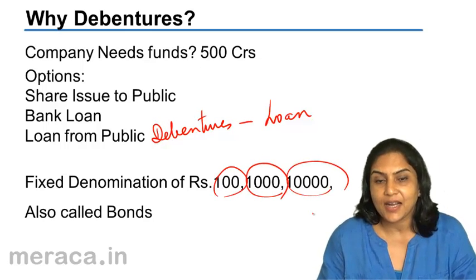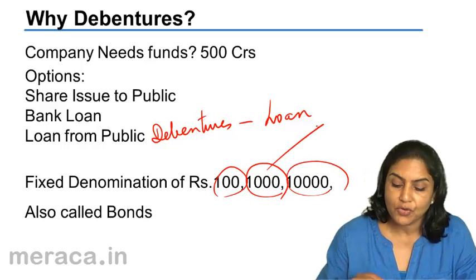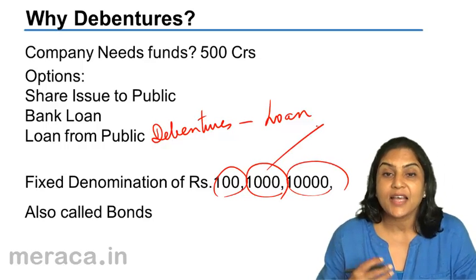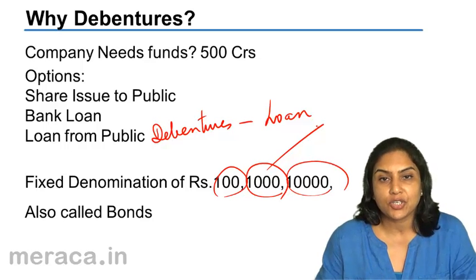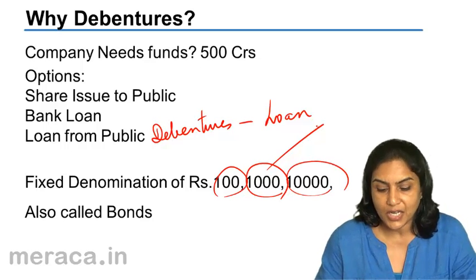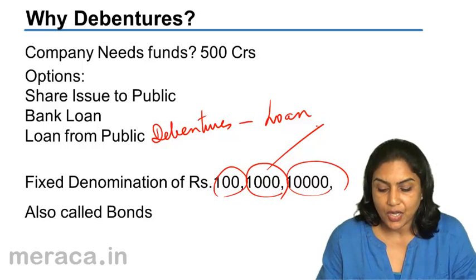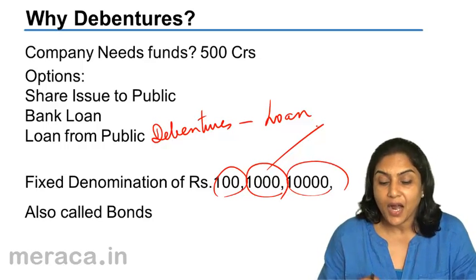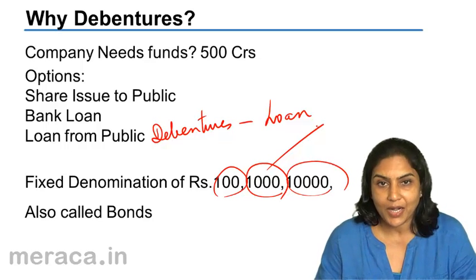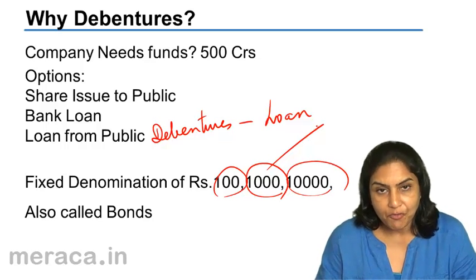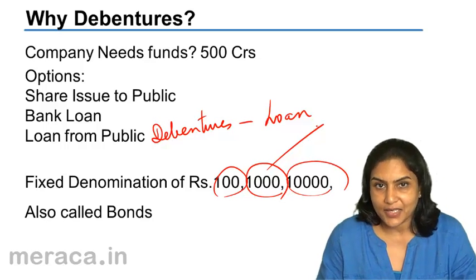Let us say a company has debentures of a denomination of 1,000. I as an investor may buy 10 debentures of 1,000 each and therefore invest 10,000. Another investor may buy 100 debentures of 1,000 each and therefore invest 1,00,000. Therefore, money from a large number of people can be raised.